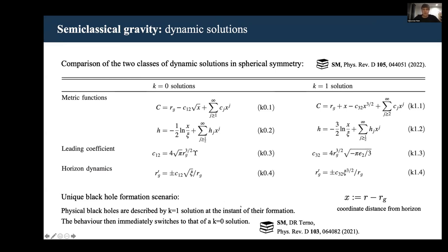What makes this continuous transition possible is that for the k=1 solution, the NEC is violated only outside of the apparent horizon. But for the k=0 solution, it's also violated up to some r within the apparent horizon. That's what enables this smooth transition between those two classes.